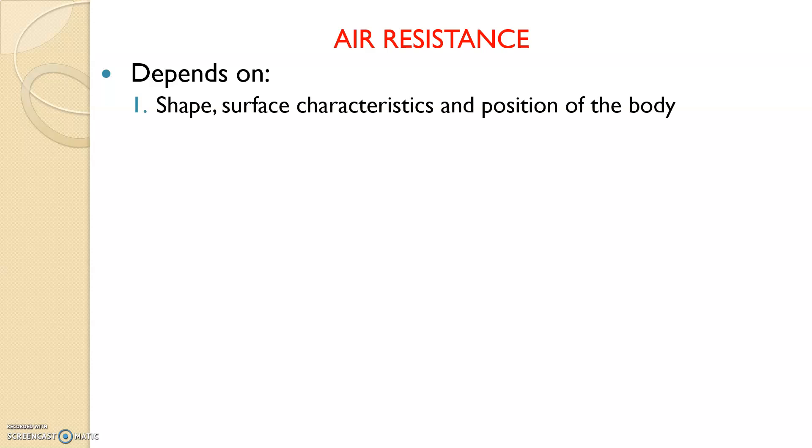Air resistance depends on the shape, surface characteristics, and position of the body, cross-sectional area of the body, and velocity of the body. For example, if you're running and doing a sprint, you won't feel as much air resistance as you would if you're traveling on a rollercoaster and you're in the front seat and you go zero to eighty, you will feel that air press against you a lot more than if you're just running. So velocity is a massive factor.